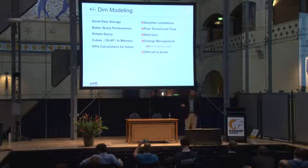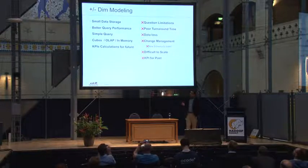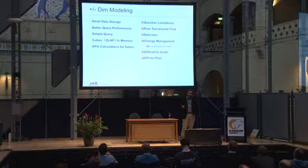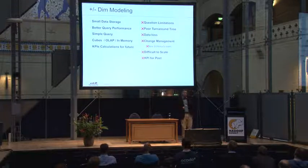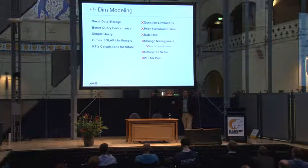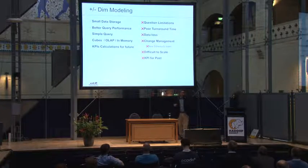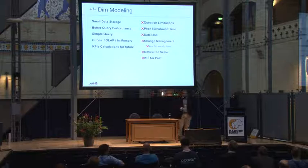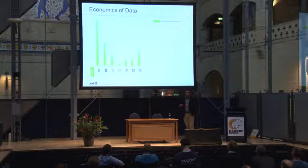Typical data warehouses are difficult to scale out, and that's partly because of dimension modeling. Another crucial limitation is that you cannot develop KPIs for past records. If you come up with a new key performance indicator and want to run it on past data, there's often no way to do that. You may have to redo the ETL process to run your KPIs for past records.